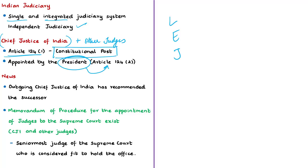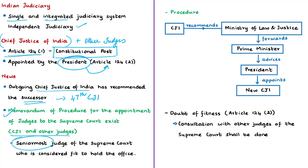The news article mentions that the present Chief Justice of India, Ranjan Gogoi, has recommended Justice Sharad Arvind Bobde as his successor, who will be the 47th Chief Justice of India. There is a Memorandum of Procedure for the appointment of judges — both for the CJI and for judges of the Supreme Court. As per this memorandum, the appointment to the office of CJI should be of the senior-most judge of the Supreme Court who is considered fit to hold the office. When the outgoing CJI is about to retire, the Union Minister of Law and Justice seeks the recommendation of the outgoing CJI.